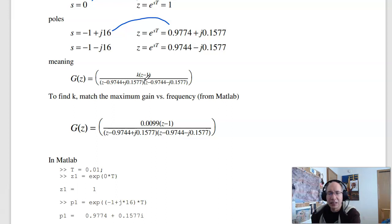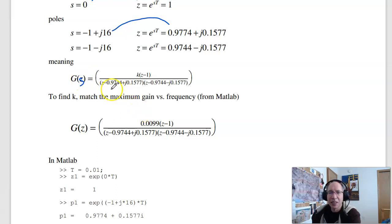To find k, make the maximum gain of g of s the same as g of z, and it gives you a gain of 0.0099.